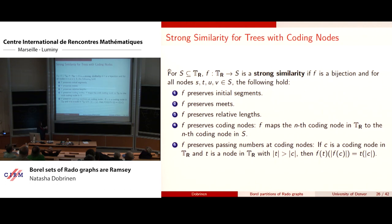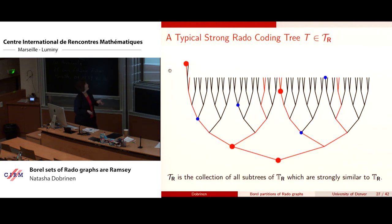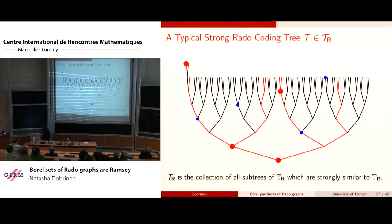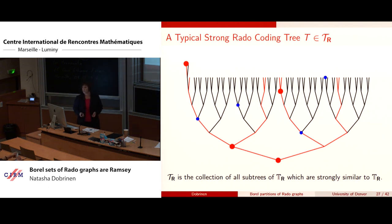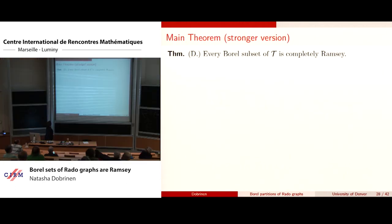Strong similarity for coding trees is the same as before, just adding in coding nodes. Passing numbers are taken care of because you're always splitting left and right anyway. A typical member of this space looks just like the original one — every coding node in the red subtree had to be a blue coding node in the original tree, giving you a collection of subtrees which are strongly similar to the original.